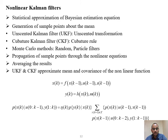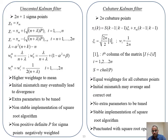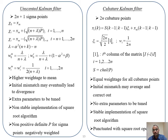All these Kalman filters average the points — the cubature points and sigma points spread around the mean — to obtain the estimated state and error covariance. The UKF and CKF approximate the mean and error covariance of the nonlinear function. In the UKF there are 2n+1 sigma points around the mean with higher weightage given to the mean, whereas in the CKF there are 2n cubature points with equal weightage given to all points.